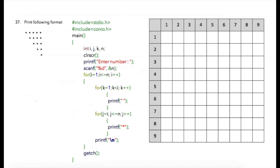We are now moving on to program number 37, in which we have this pattern. Notice that in this pattern we are printing stars, but to have this pattern printed we need to add a few spaces as well in this area, so there are spaces on these locations.